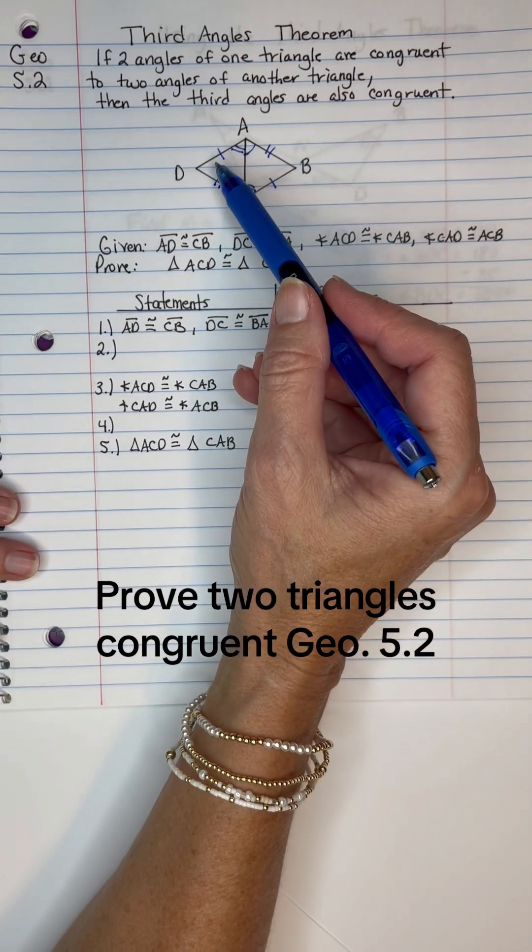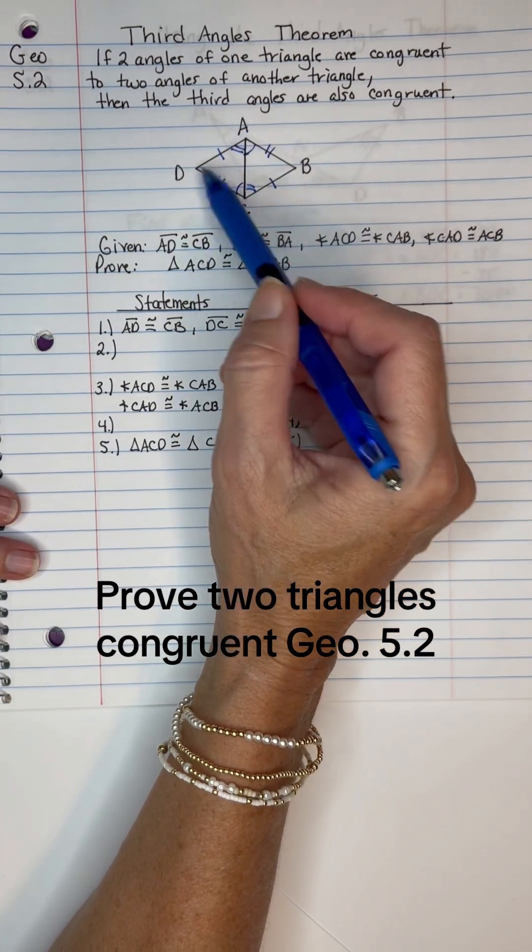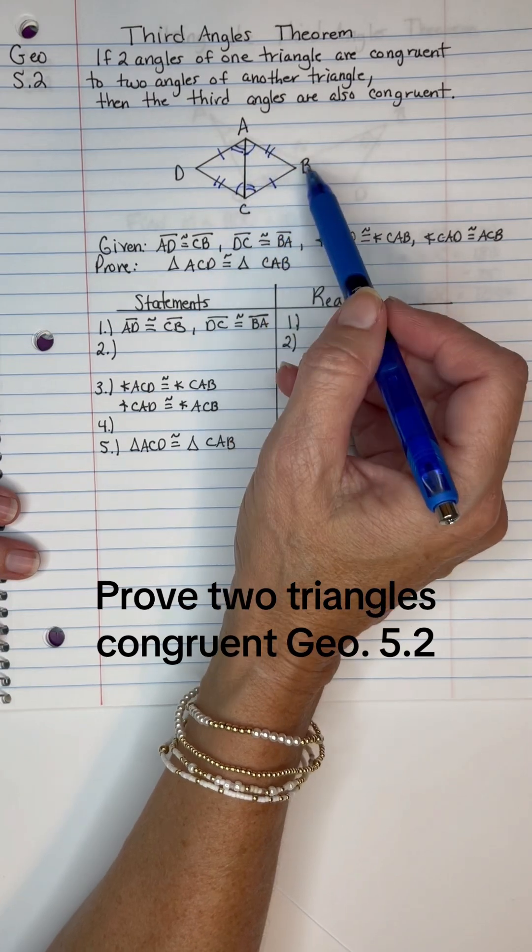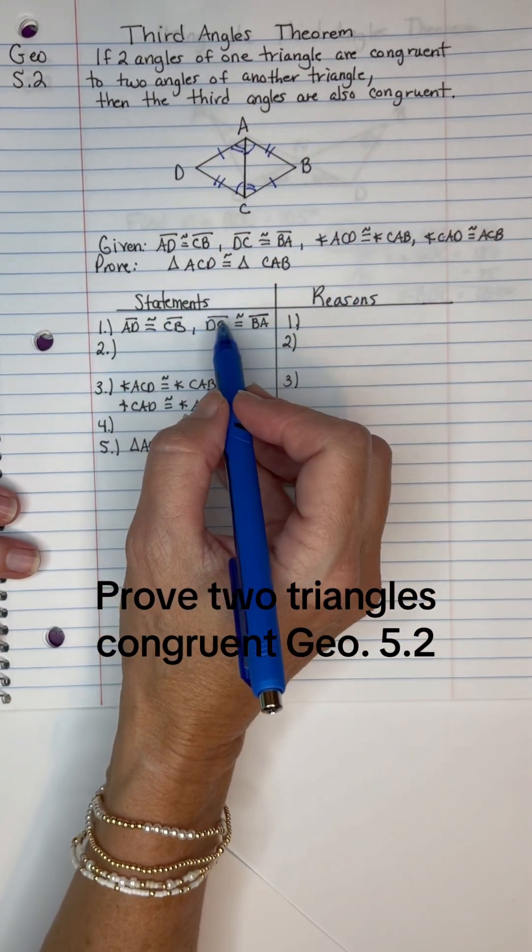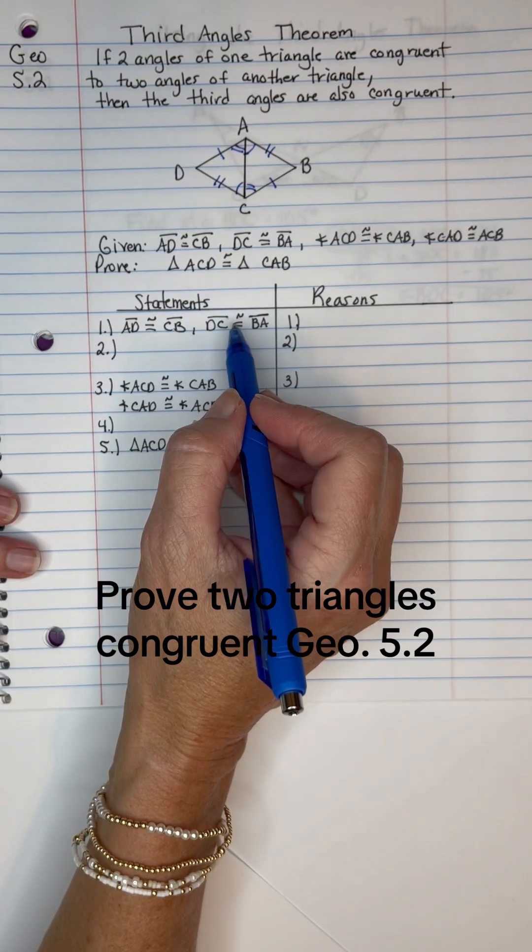I need to prove that the triangle on the left, ACD, is congruent to the triangle on the right, CAB. And I'm given two of those leg segments. I need that third one.